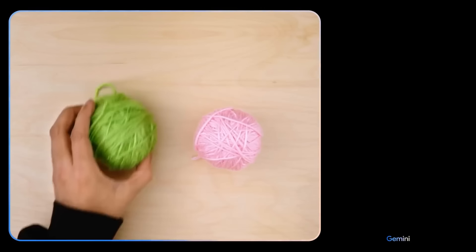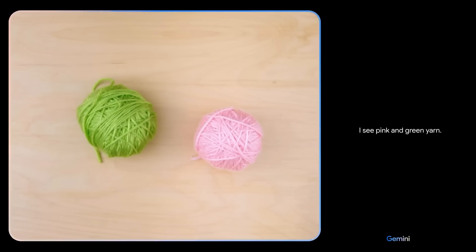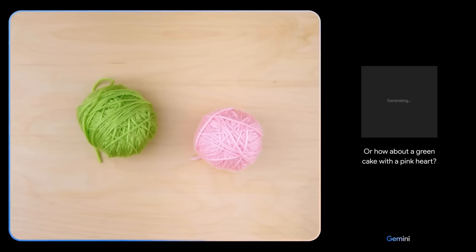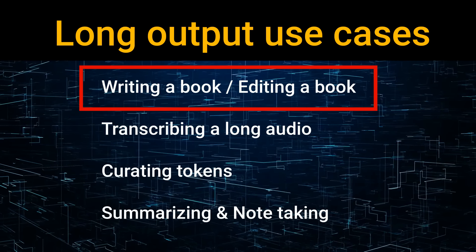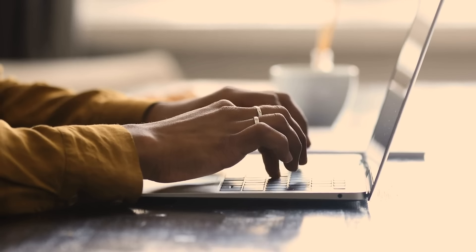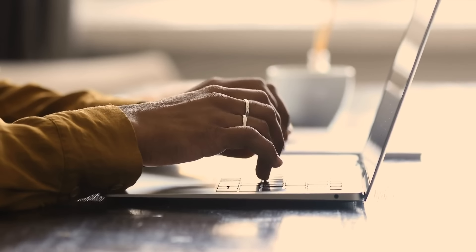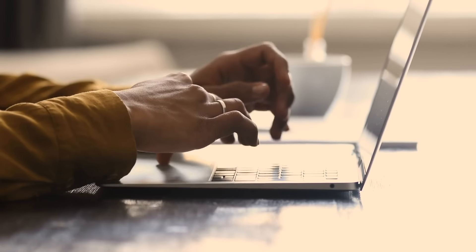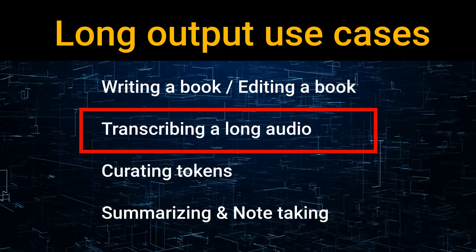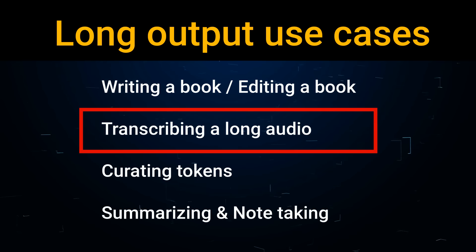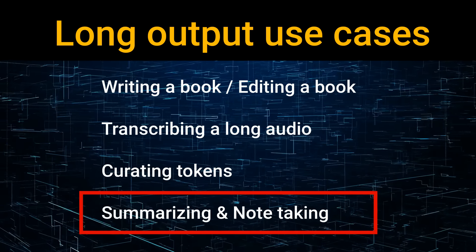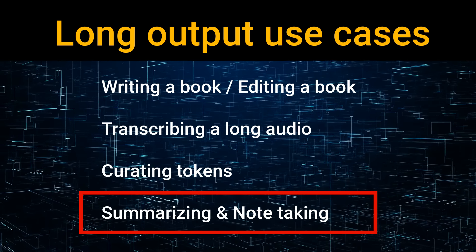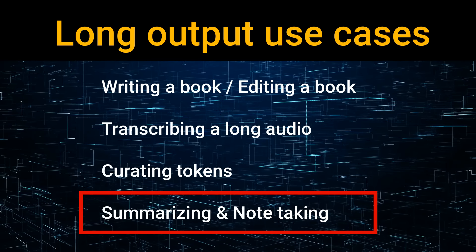That means that currently, these models — and it's not just the Gemini ones, it's from other providers as well — are not something you can use for a long output. There are lots of use cases for long outputs. If you want to write a book, or edit a book where you give it a whole book and have it go through changing things more complicated than find and replace, it would be great to go a hundred thousand tokens in, a hundred thousand tokens out. But unfortunately, that's not the case. One of the biggest use cases I've personally been looking for is a way to get long summaries and long forms of note-taking.